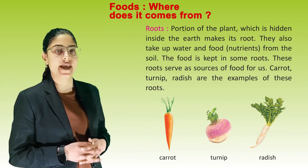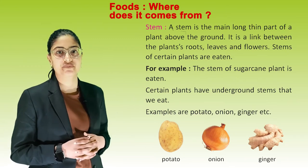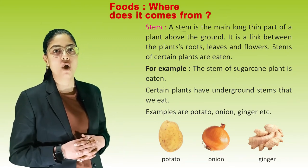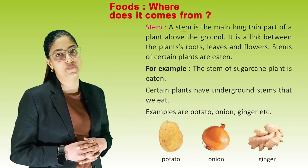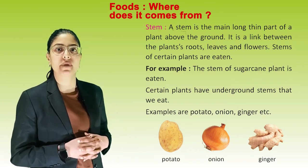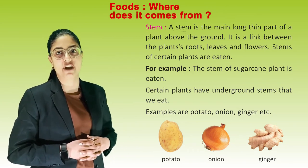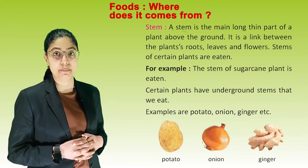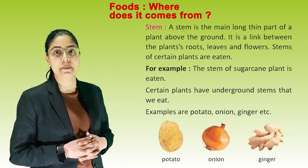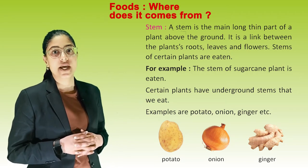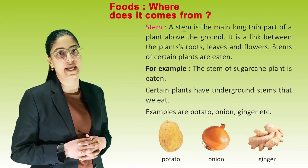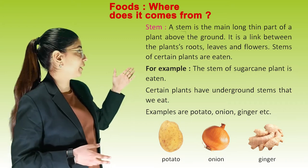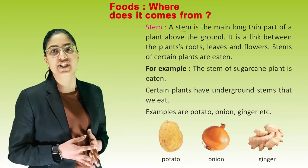Stem: a stem is the main, long, thin part of the plant above the ground. It is a link between the plant's roots, leaves and flowers. Stems of certain plants are eaten; for example, the stem of the sugarcane plant is eaten. Certain plants have underground stems that we eat, such as potato, onion, and ginger.